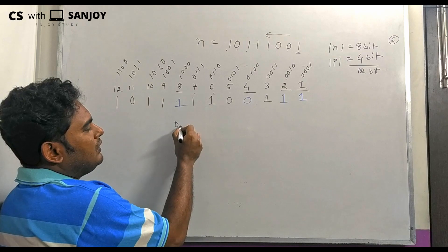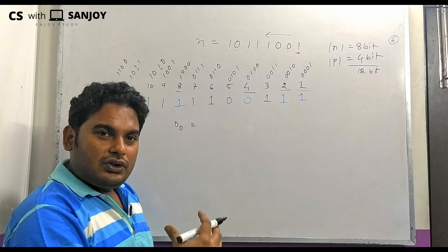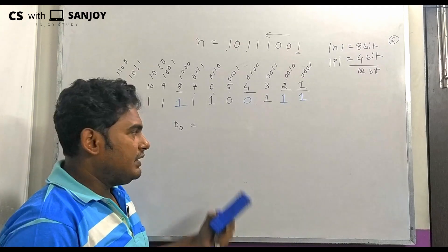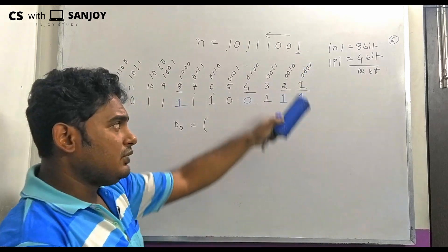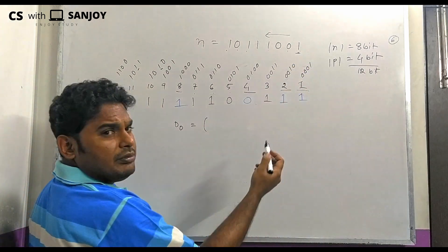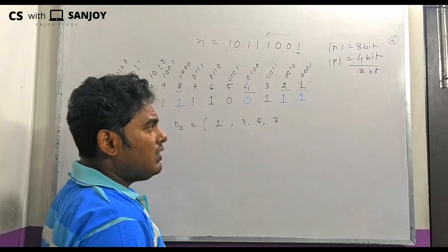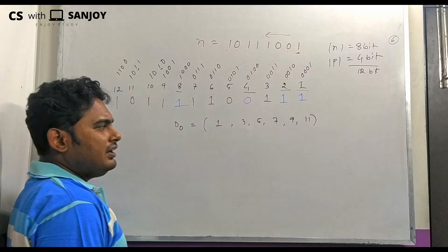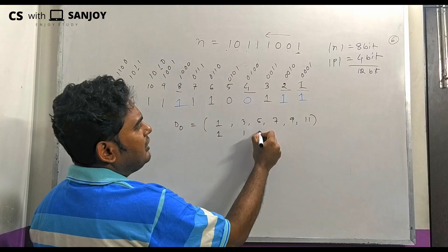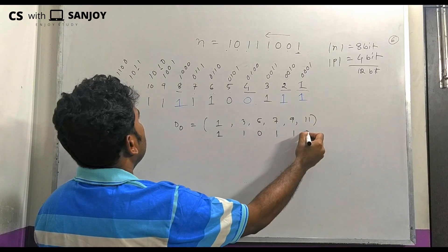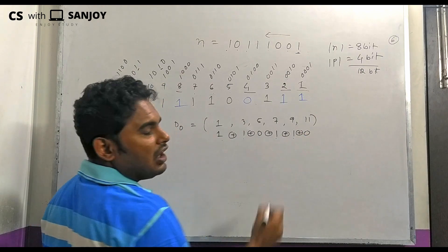On the receiver side, we calculate D0. The receiver does not know which bit has changed. We check positions with LSB=1: positions 1, 3, 5, 7, 9, 11. Counting the ones: 4 ones total, which is an even number, so D0 equals 0.